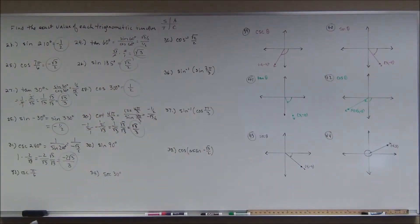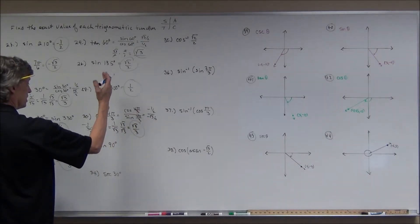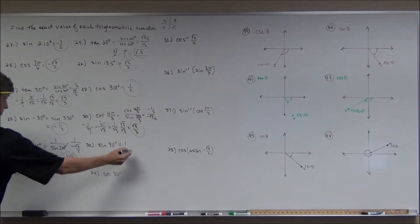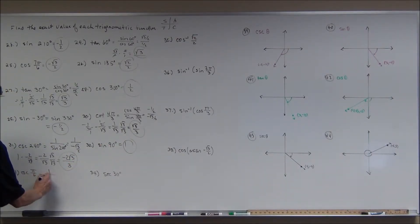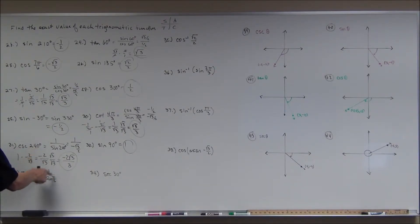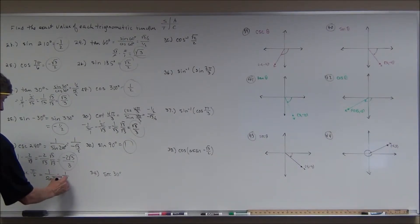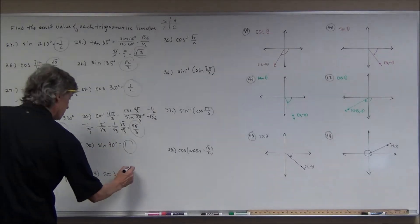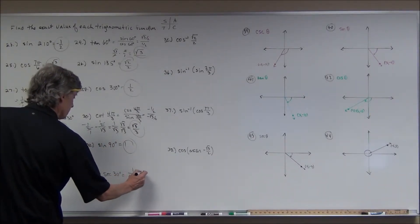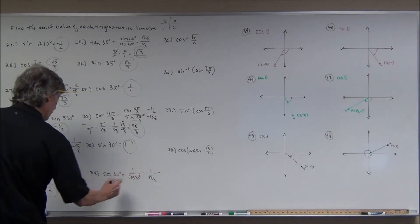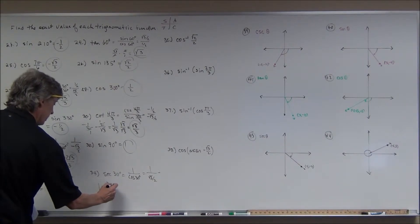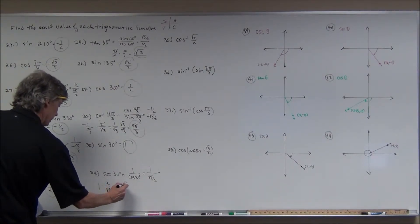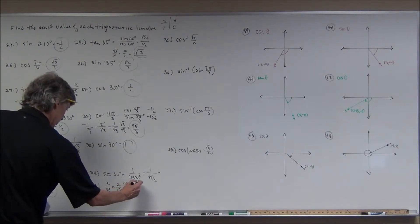The sine of 90 degrees is probably the easiest one — the sine is the y-value, which is 1. The cosecant of π over 6 is 1 over sine of π over 6. Cosecant is 1 over sine, not cosine — that would be secant. Sine of π over 6 is 1/2, so cosecant is 2. The secant of 30 degrees is 1 over cosine of 30, which is 1 over square root of 3 over 2. That gives 2 over square root of 3. Rationalize the denominator: 2 square roots of 3 over 3.